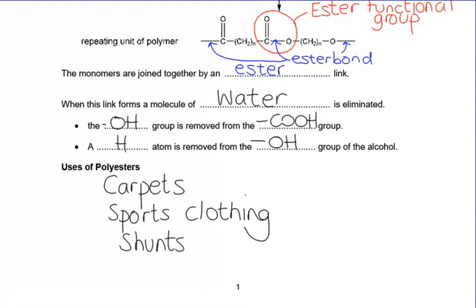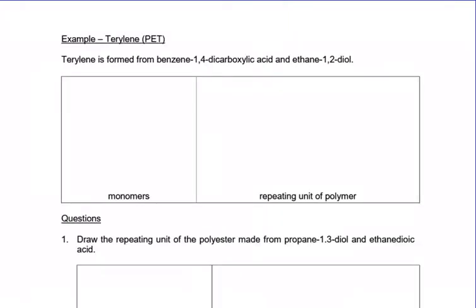Now we're going to have a look at a few different polyesters and see if we can work out how to draw the repeating unit - the bit of the polymer that repeats over and over again - from the monomers. There are certain polymers mentioned on the AQA specification, so it would be a good idea to know the monomers associated with those polymers. One of those is Terylene. Terylene is made from benzene-1,4-dicarboxylic acid - which has a benzene ring with two COOH groups at positions 1 and 4 - and also from ethane-1,2-diol. Pause the video and see if you can draw out those two monomers.